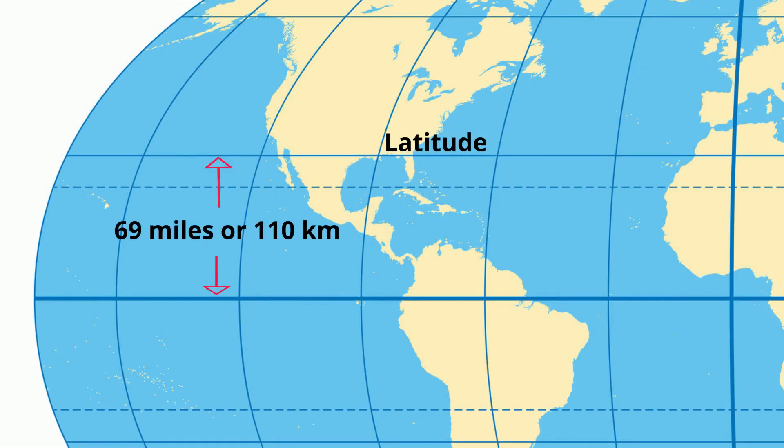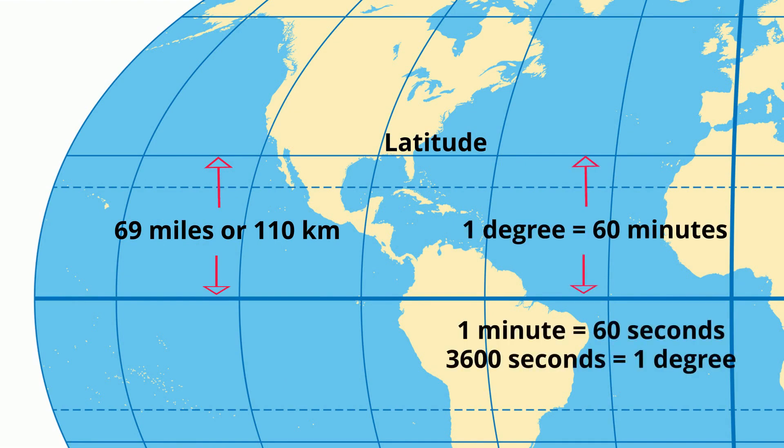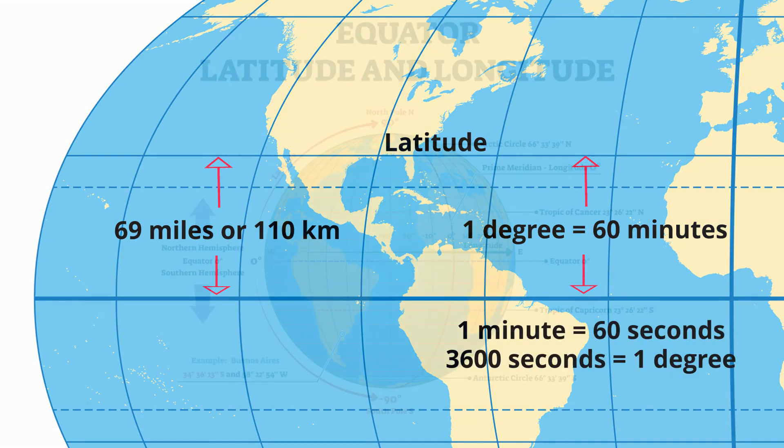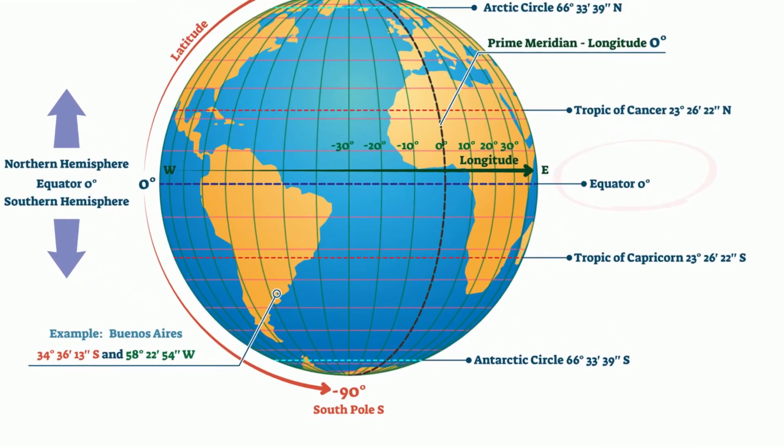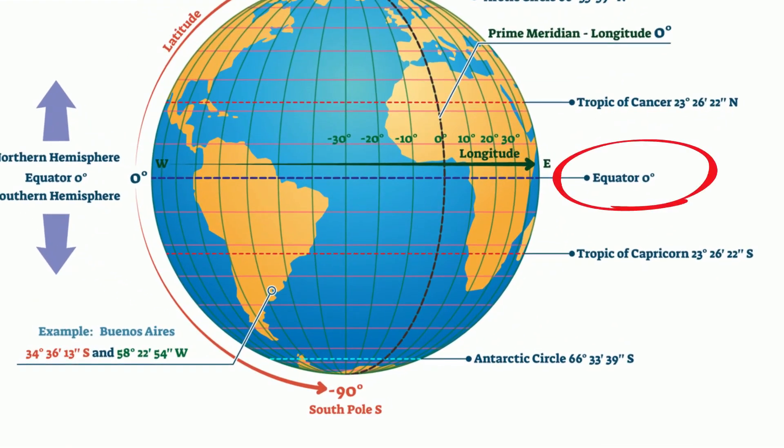Each degree is divided into 60 minutes and each minute is divided into 60 seconds. There are 3600 seconds in a degree. The starting point is the equator found at zero degrees. The northern hemisphere in this picture is above the equator and the southern hemisphere is below the equator.